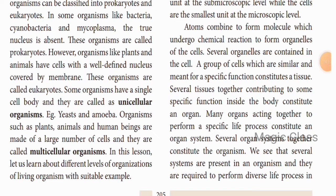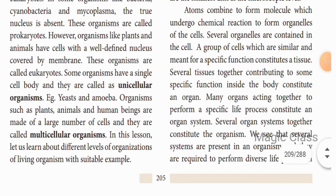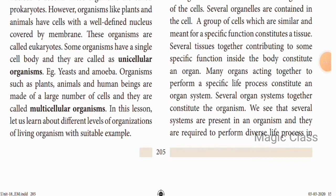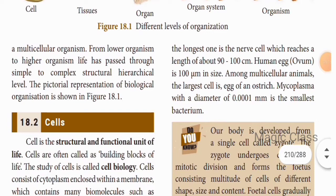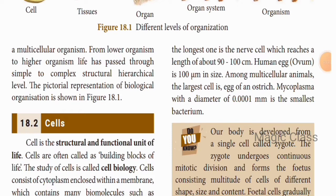A group of cells which are similar and meant for a specific function constitutes a tissue. A group of tissues combine together to perform a specific function, forming an organ. Similarly, many organs combine to carry out one specific life process, forming an organ system. Several systems are present in an organism and are required to perform diverse life functions in a multicellular organism. From lower to higher organisms, life passes through a simple to complex structural hierarchy.